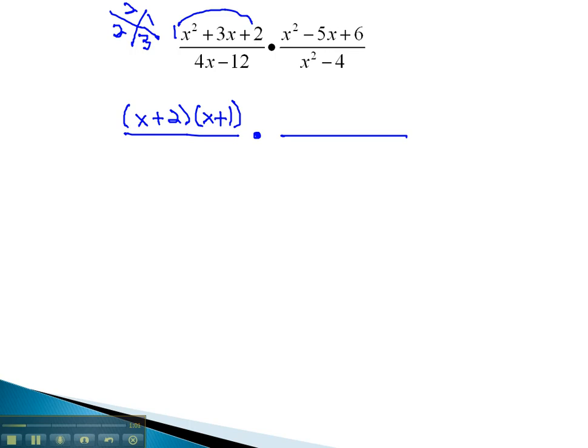In the denominator, we notice with two terms, they have a greatest common factor of 4. Factoring out the greatest common factor of 4 leaves us with x minus 3.